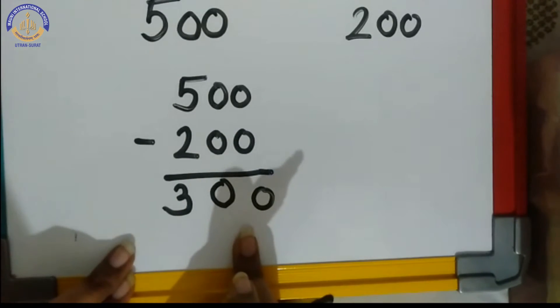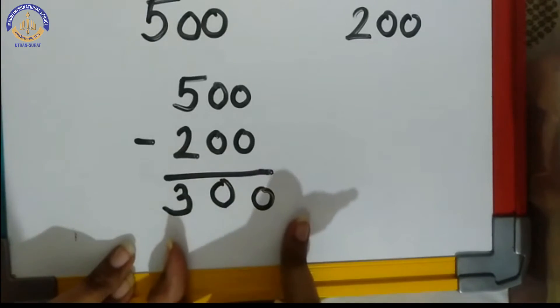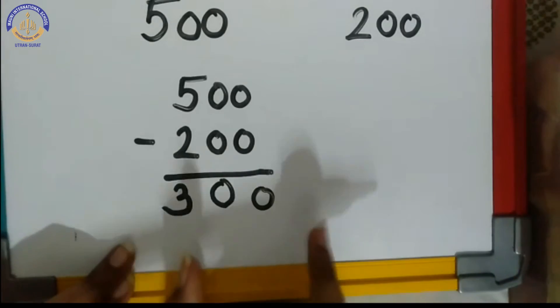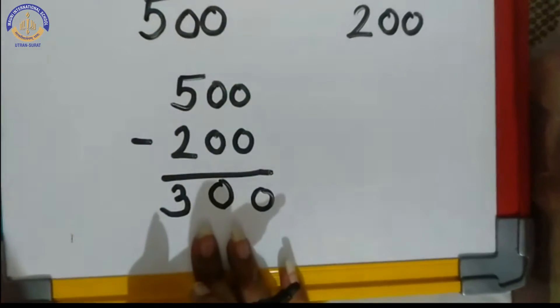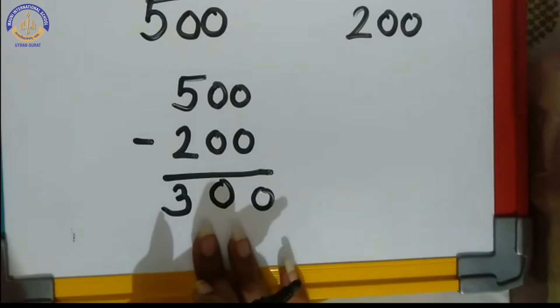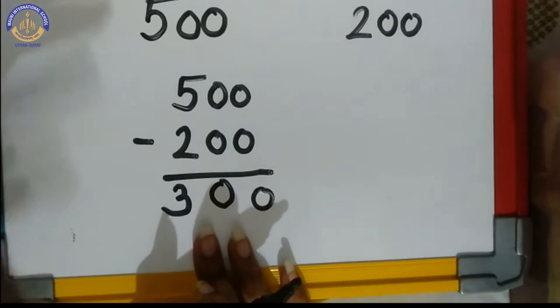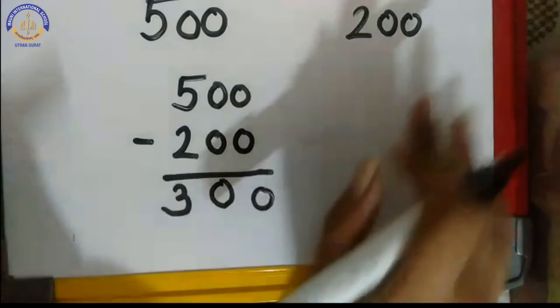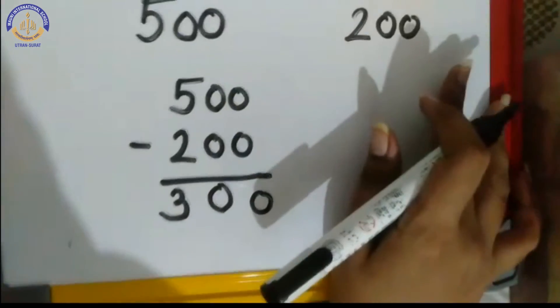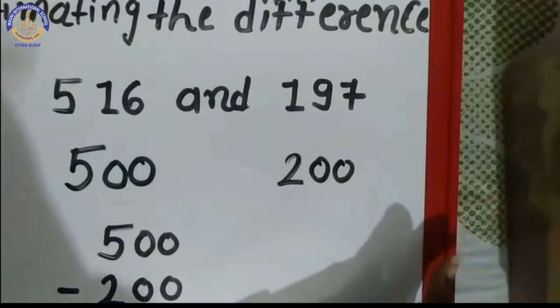This is our estimated difference. It means we get an idea that our answer should be greater than 300, or around 300. So now we have to check the exact difference.